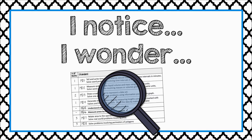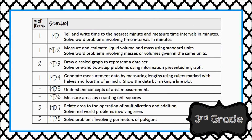As you look at the standards for measurement and data, jot down some I Notice statements and some I Wonder statements. Here are the standards related to the measurement and data domain. The left-hand column indicates the number of items assessing each standard on the EOG. As you make your I Notice and I Wonder statements, skip the standards that have been crossed out as they were not directly assessed on the EOG. At this point, you may pause the video.